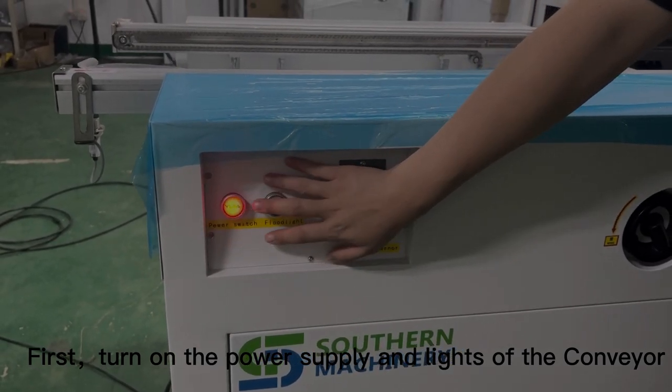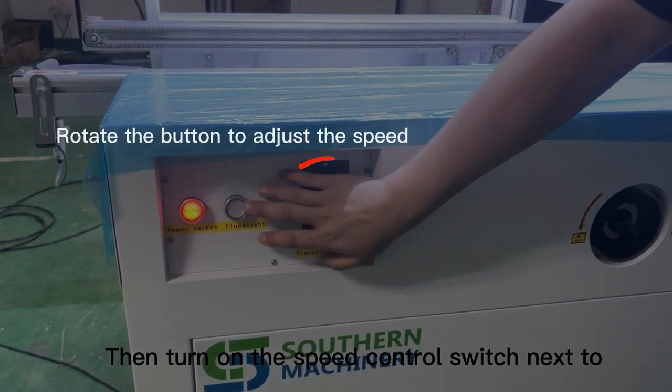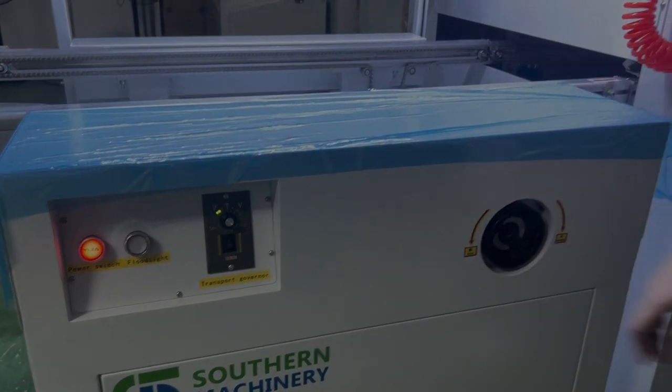First, turn on the power supply and lights of the conveyor, then turn on the speed control switch next to it.